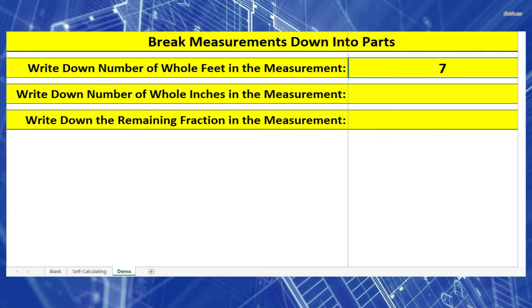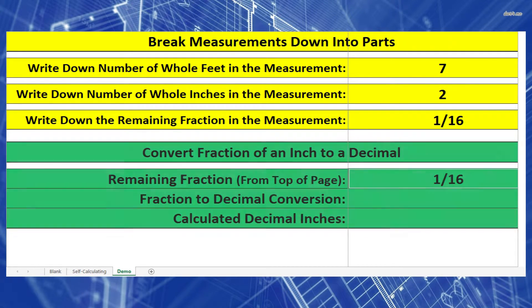So on our spare piece of paper we're going to want to separate our feet, inches, and fractions of an inch like we've been doing the whole time. Once again we're going to start with the fraction of an inch. We need to convert 1 sixteenth of an inch into a decimal inch.